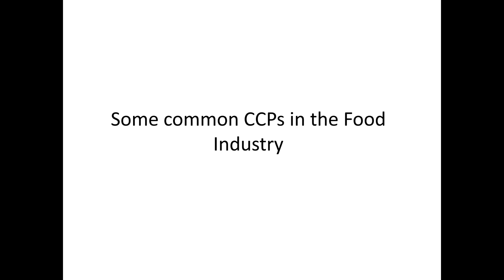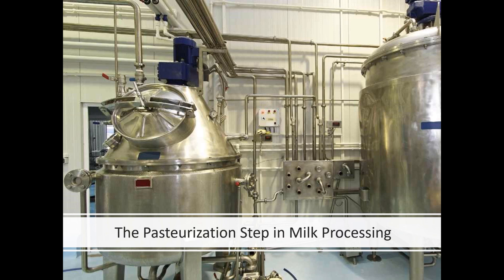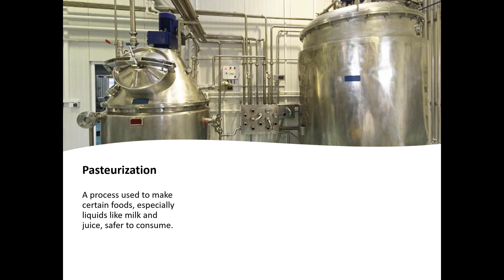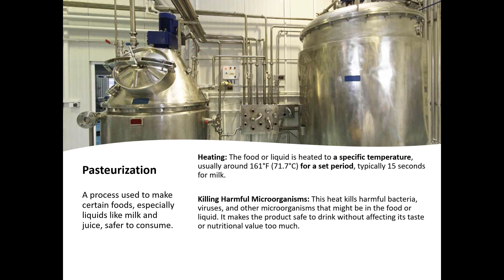There are some common CCPs in the food industry. I'm going to give you two more examples of CCPs to help you understand what a CCP is. If you were to look at the pasteurization of milk — so if you're working in a dairy or a milk processing plant — you pasteurize milk. Well, what is pasteurization? Pasteurization is used to make foods like milk safe for consumption. The first step is the heating of the liquid or milk to a particular temperature, and why do you do this? It's to kill those harmful microorganisms that, if left in the liquid, could harm the people consuming it — in our case, milk.